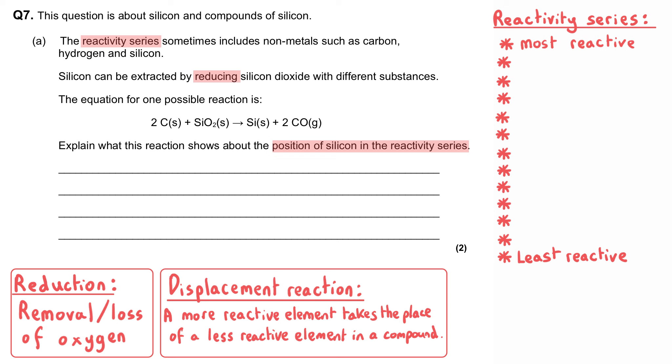And you can see from the equation that we've been given, at the beginning, the silicon dioxide is silicon bonded with oxygen, but at the end it is converted into silicon by itself. So it has had the oxygen removed, it has been reduced.